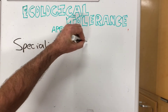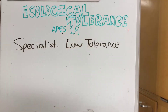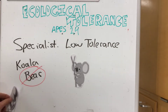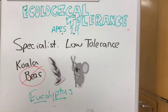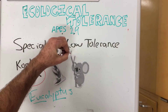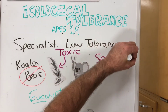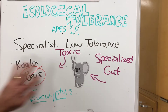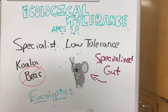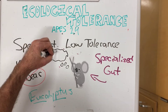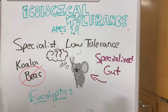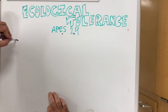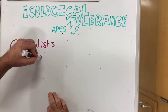Now let's take a look at a specialist species. Another animal sometimes called a bear — though it isn't really one — is the koala bear. The koala is actually a marsupial, and the only thing it eats are eucalyptus leaves. Eucalyptus leaves are toxic, so the koala has to be very specialized to digest them and excrete the waste. As conditions change in Australia and eucalyptus trees may not survive as well, what's going to happen to the koala? That is yet to be seen.